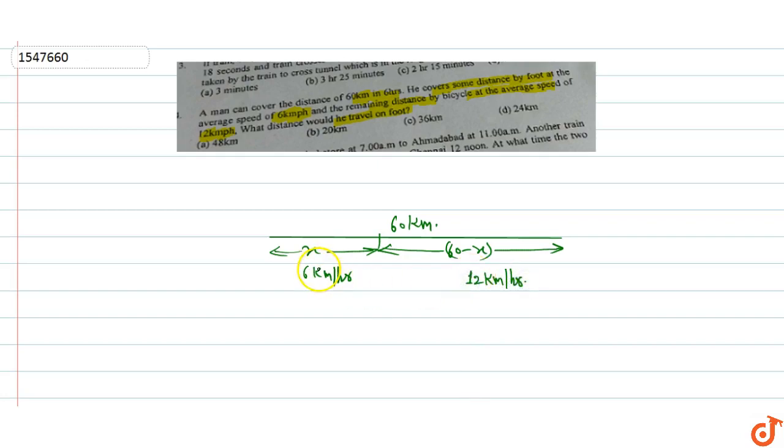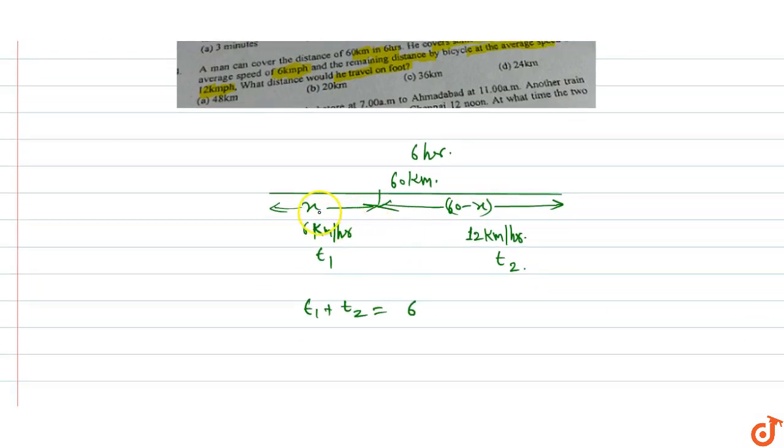Let's suppose this time is t1 and this time is t2. Total time is 6 hours, means t1 plus t2 is equal to 6 hours. t1 time is x divided by speed 6.